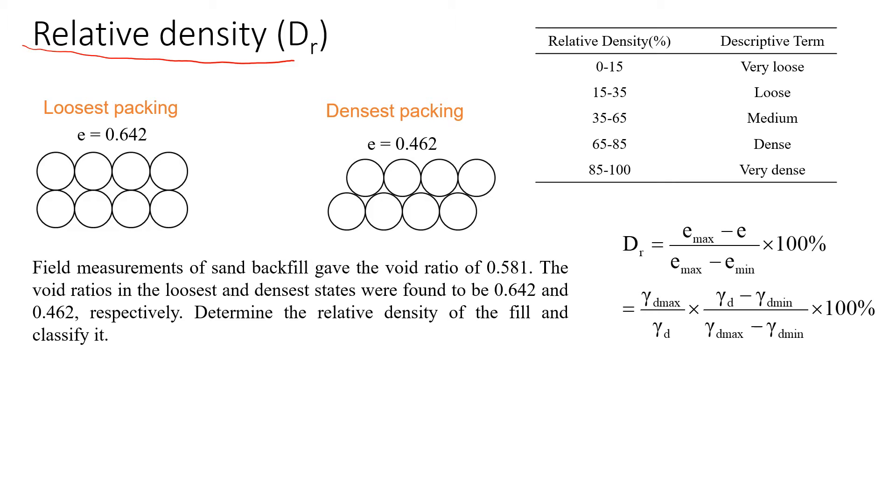Let's look at this example, the one that is shown here. We have sand backfill, and when we measured the void ratio of that sand, the one that we put as a backfill, it was 0.581. This is what we call in situ void ratio, 0.581.